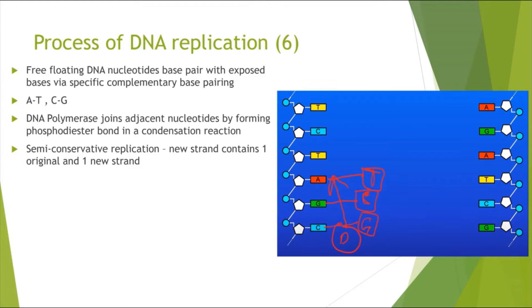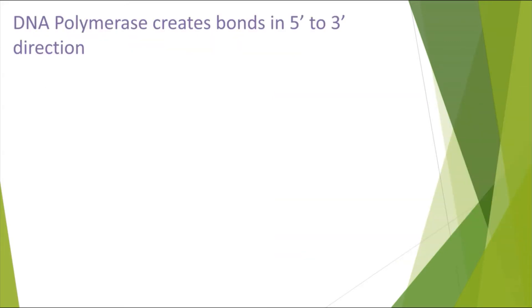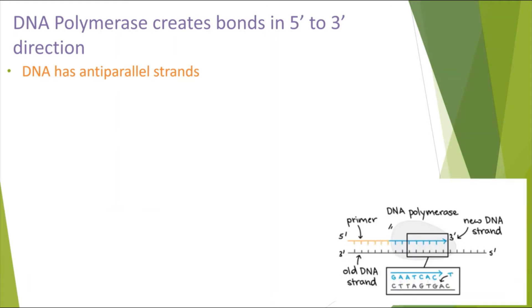Make sure you learn these mark points as they come up frequently. The DNA polymerase creates the phosphodiester bonds in the 5' to 3' direction. Why is this? It's because DNA has anti-parallel strands.